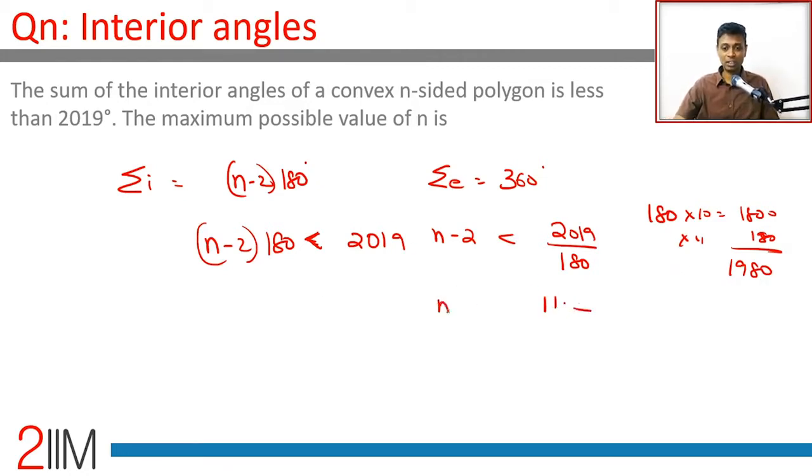Since n-2 is less than 11 point something, n is less than 13 point something. Therefore, the maximum possible value of n is 13.